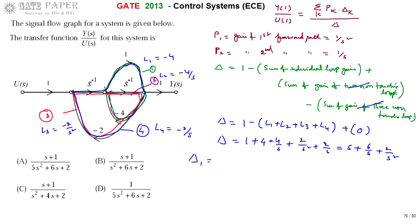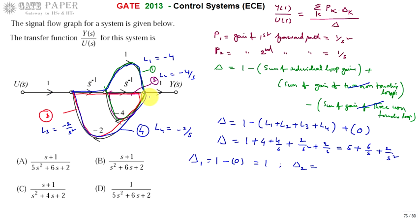Delta1 is computed similarly, but loops connected to the first forward path must be neglected. All four loops are connected to the first forward path, so no remaining loops exist, giving Delta1 = 1. Likewise, all loops are connected to the second forward path, so Delta2 = 1 as well.